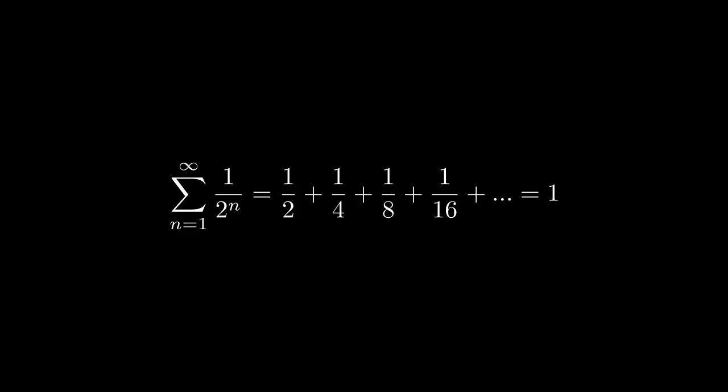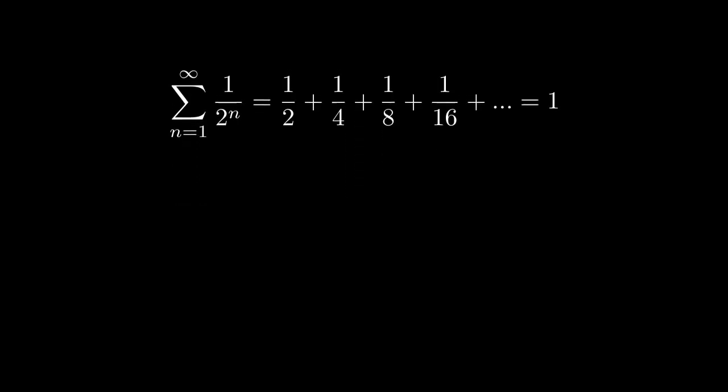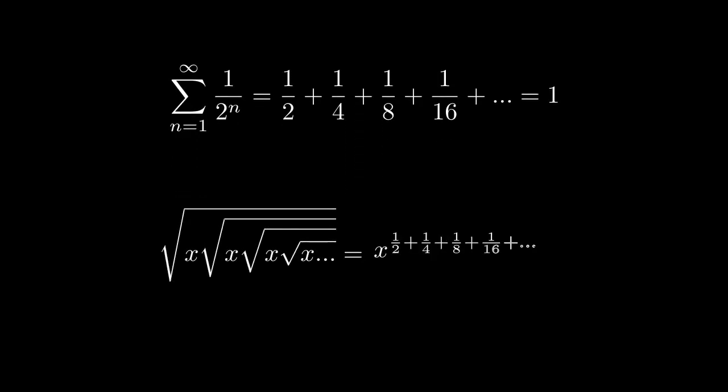We can now take this knowledge back to our previous statement that this cascading radical equaled x to the 1 half plus a fourth plus an eighth continuously, and just go ahead and condense that all down to 1, which means that large radical expression just equals x.